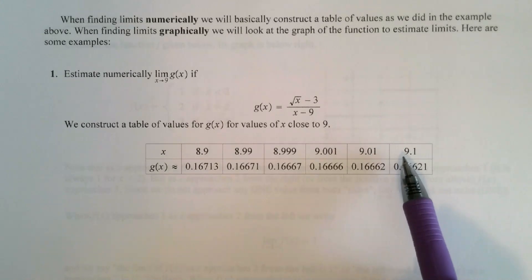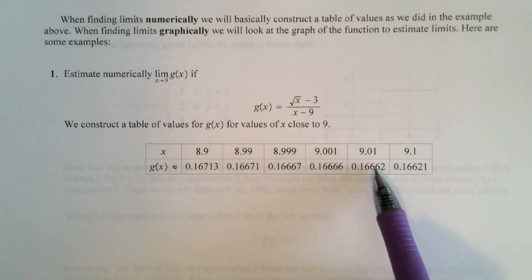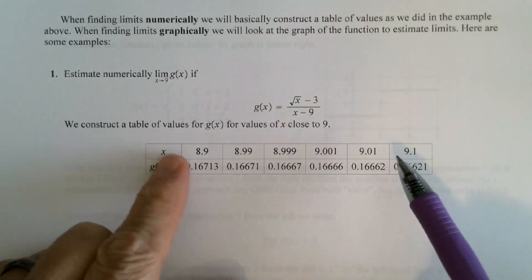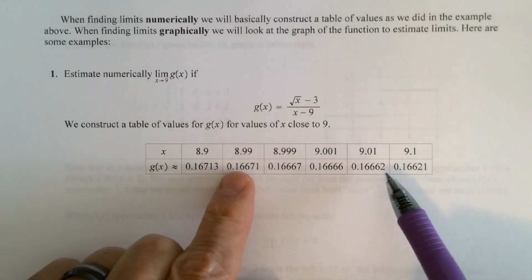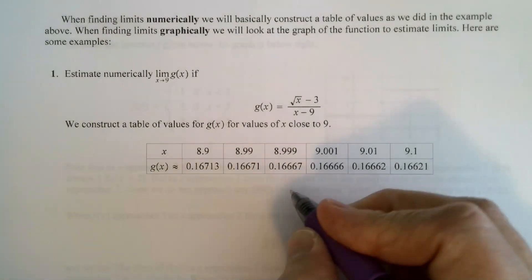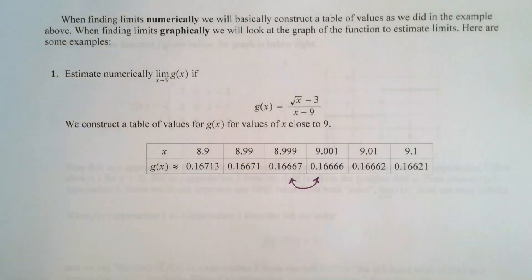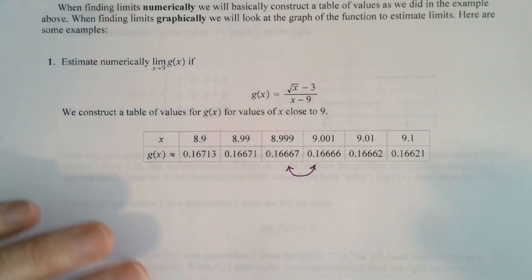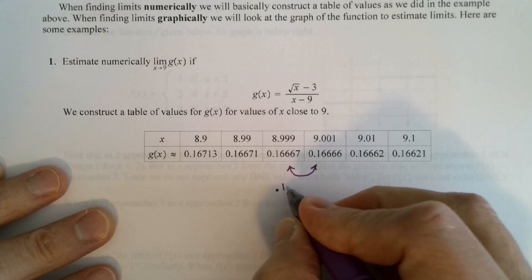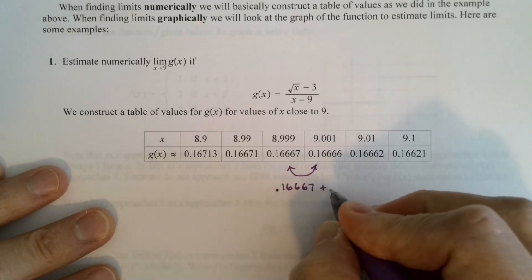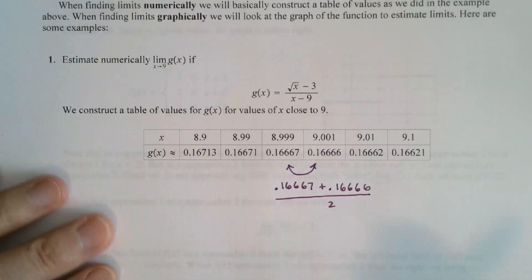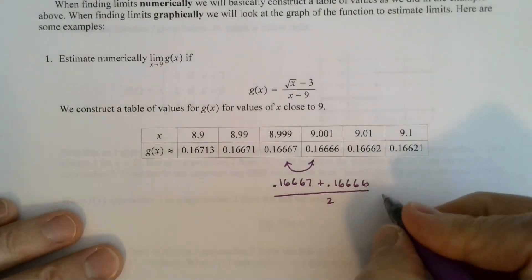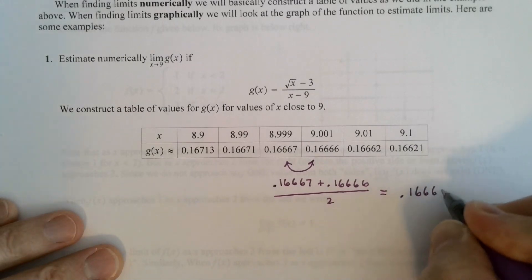Also, I'm approaching 9 from above with values a little bit more than 9: 9.1, 9.01, 9.001. So as we move from either side inward, getting closer and closer to 9, the function is getting closer and closer to something in between these two values. We can approximate it — I might just take the average of these two values. The average gives a good estimate, which is in this case 0.166665.